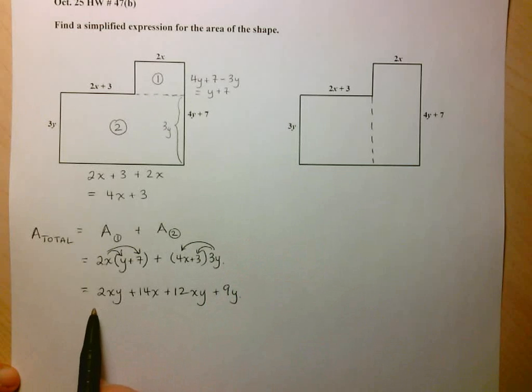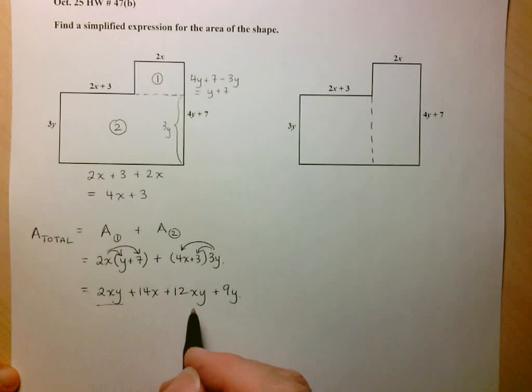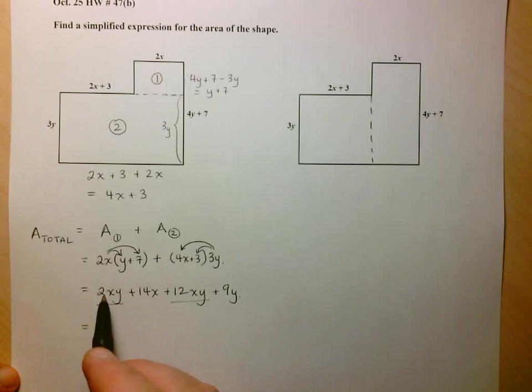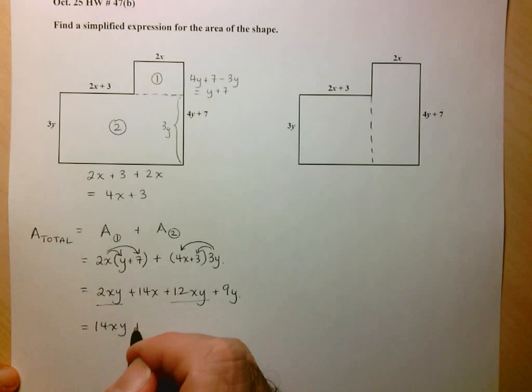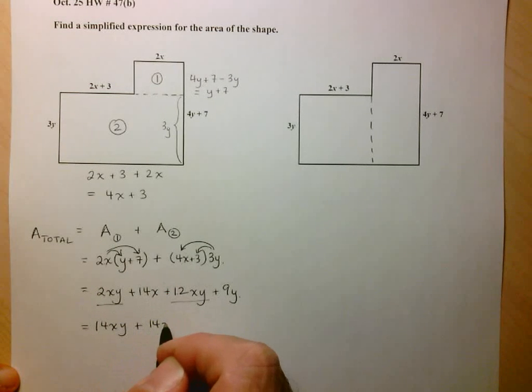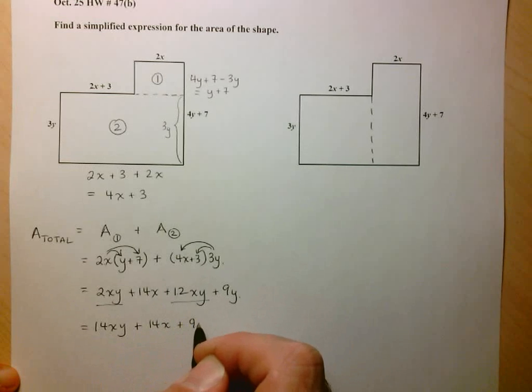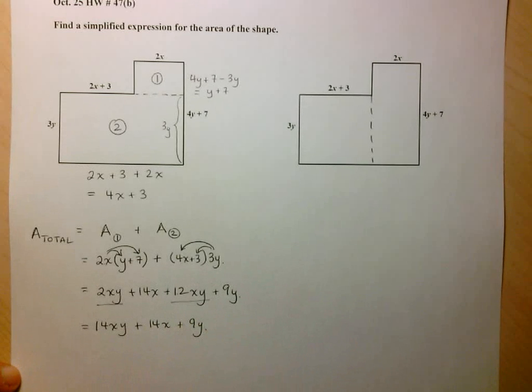At this point here, I have to add together like terms. And the only like terms are the 2xy and the 12xy. So we have 2 plus 12 is 14xy. Then we've got plus 14x and then plus 9y.